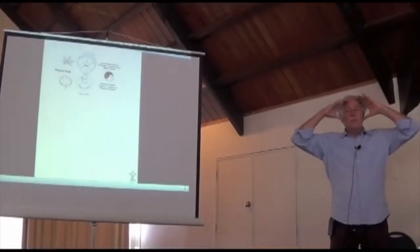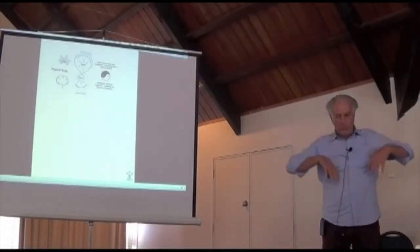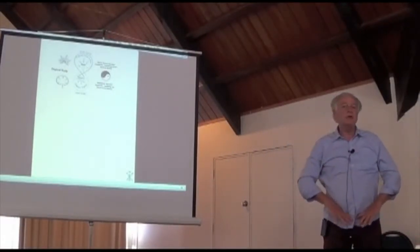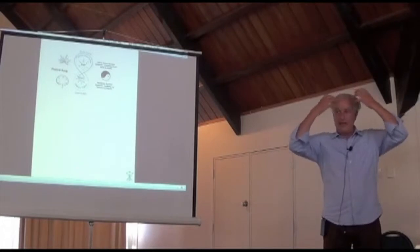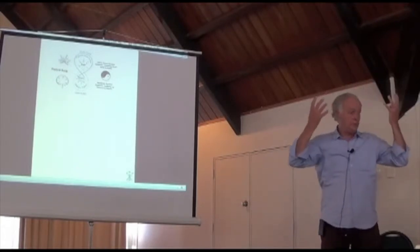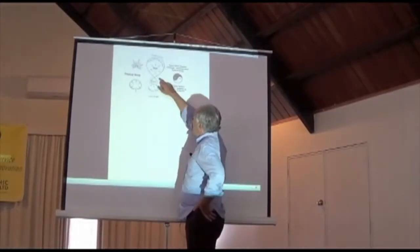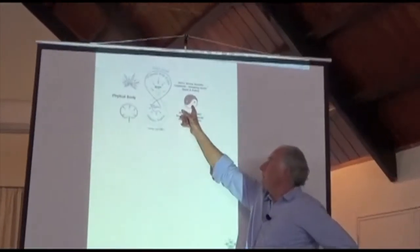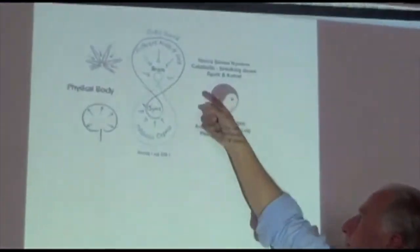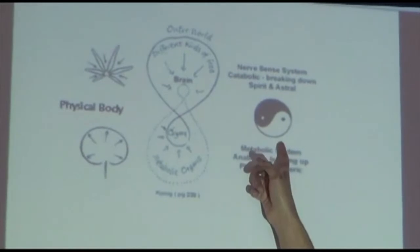And so what we've got to see is that this nerve sense system actually works all the way down into that metabolic process and becomes active there. And similarly, this works all the way up into the head and becomes active there as well. And so this is why we have this picture. And it's just like the yin-yang symbol is that we have a metabolic process but the metabolic process works up into the nerve sense and the nerve sense works into the metabolic.